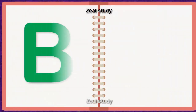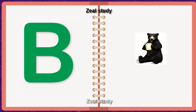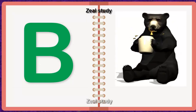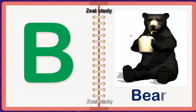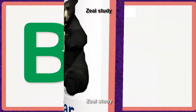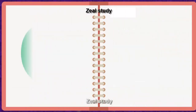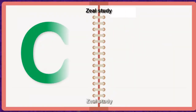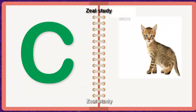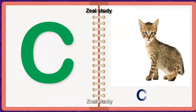B for Bear. B, E, A, R. Bear. C for Cat. C, A, T. Cat.